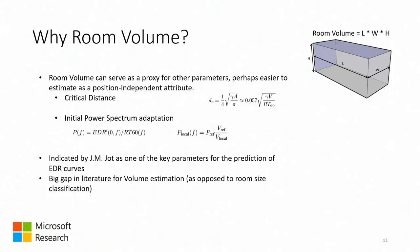Why room volume? Room volume as an acoustic parameter can serve as a proxy to obtain other parameters. For example, the critical distance can be described by a formula that includes volume. Also, the initial power spectrum from the energy decay relief — the T60 decay — can be adapted using a ratio of a reference volume and a local volume. That work has also been discussed at the AVAR conference.